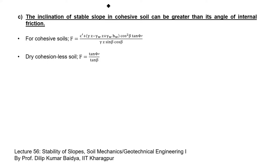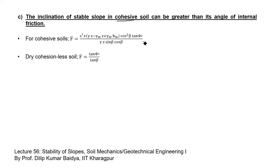Now let us move towards option C. Option C states that the inclination of a stable slope in cohesive soil can be greater than its angle of internal friction. It is talking about the stable slope in cohesive soil. We have the formula for cohesive soil for finding the factor of safety.